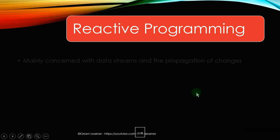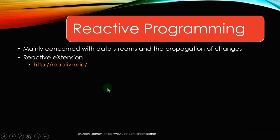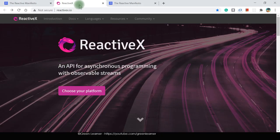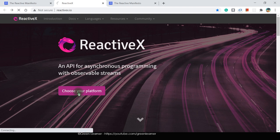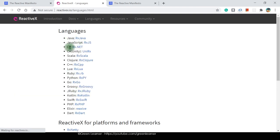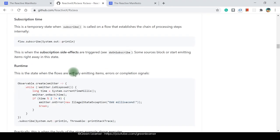Now let's move to reactive programming. Reactive programming is mainly concerned with data streams and the propagation of changes happening with those data streams. There are reactive extensions for many programming languages. You can visit ReactiveX.io, where there is lots of information. If you choose your platform — Java, JavaScript, C#, Scala, and others — and click on RxJava, it takes you to the GitHub repository where you can get all the information on how to learn and use it.